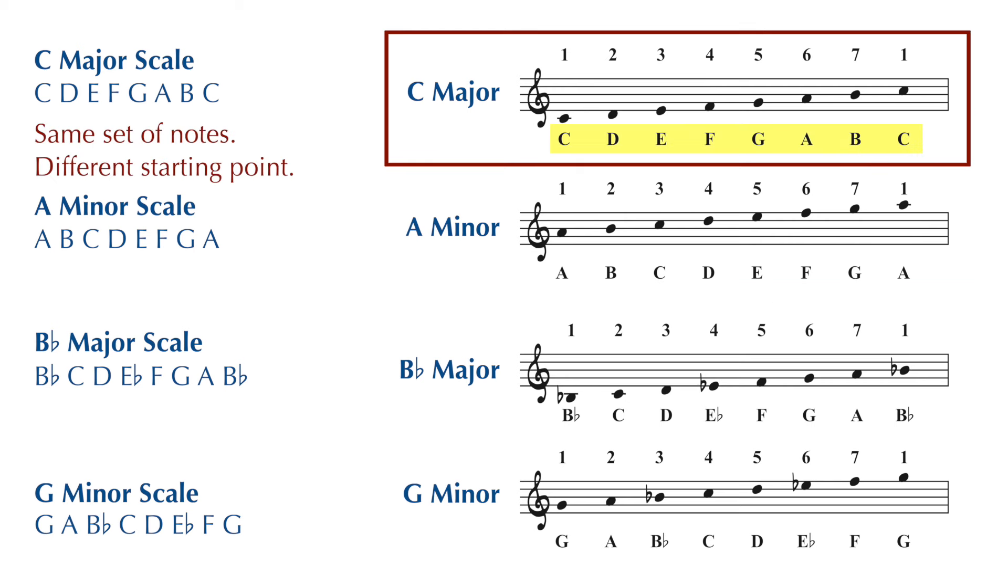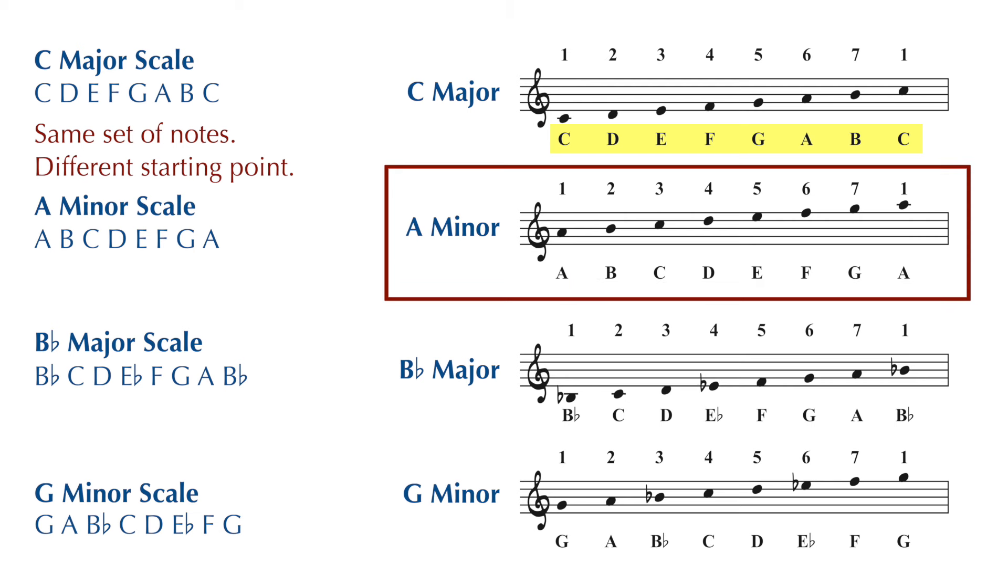The C major scale is made up of C, D, E, F, G, A, and B, and then it starts over again at C. The A minor scale is made up of those same notes, it just begins on A.